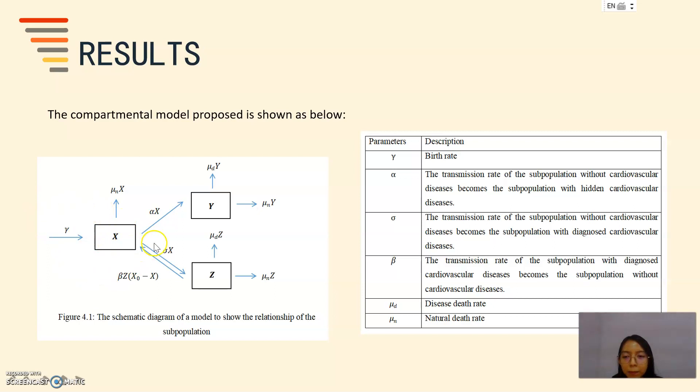X represents the healthy population without cardiovascular disease. Y represents the population with hidden cardiovascular disease. And Z represents the population with diagnosed cardiovascular disease. And these are the parameters represented in the schematic diagram.